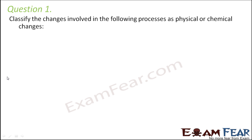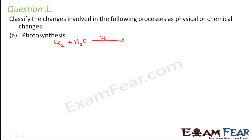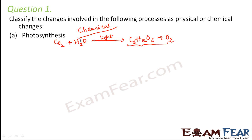Question number 1: Classify the changes involved in the following processes as physical or chemical changes. Photosynthesis — it is the process by which plants prepare their own food using carbon dioxide and water. Carbon dioxide and water combine in the presence of light to form glucose, that is carbohydrate C6H12O6, plus oxygen. New chemical substances are being formed, so photosynthesis is a chemical change.